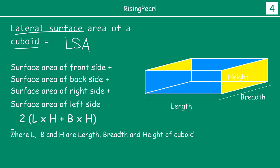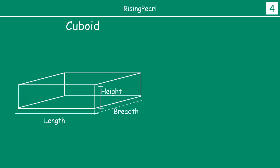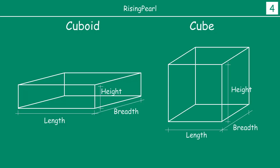Now let's take a look at the cube. For the cuboid we have learned the total surface area (TSA) and the lateral surface area (LSA). A cube is exactly the same as a cuboid except that all three dimensions are equal. That means if the length is 2 units, the breadth is also 2 units and the height is also 2 units — whatever the measure of one side, all other sides have the same measure. That is the definition of a cube.